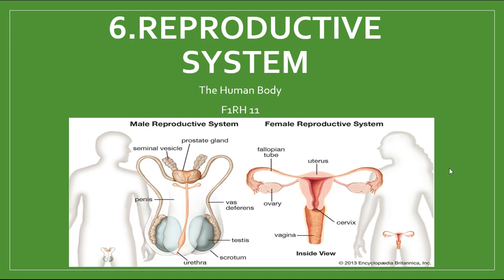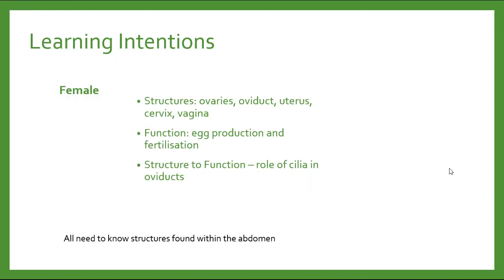This is the second video covering the reproductive system, and this time we will focus on the female reproductive system. The need-to-know structures are the ovaries, the oviduct also known as the fallopian tubes, the uterus also known as the womb, the cervix, and the vagina. The function we'll be looking at is the production of egg cells and their role in the fertilization process. All of these need-to-know structures will be found within the abdomen.